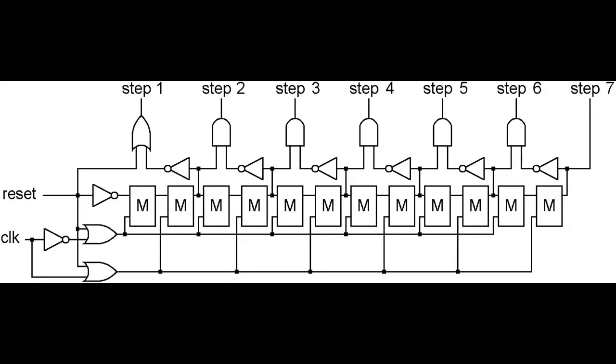These six steps are going to repeat as our computer executes different instructions. The stepper is quite a complicated piece of circuitry but it's only using parts we've seen so far. In the middle there are 12 one bit memories that are chained together, along with some inverters, a few OR gates, and a few AND gates as well.